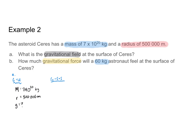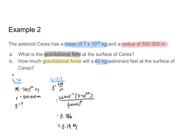The gravitational field strength is given by GM over R squared. G is 6.67 times 10 to the negative 11th, the mass is 7 times 10 to the 20th kilograms, and the radius is 500,000 squared. Plugging all of this into the calculator, I get that g is equal to 0.186, or approximately 0.19 newtons per kilogram. That's my answer for part A.